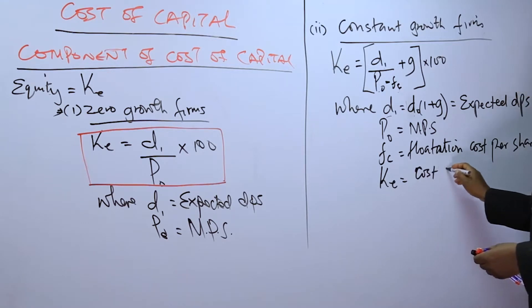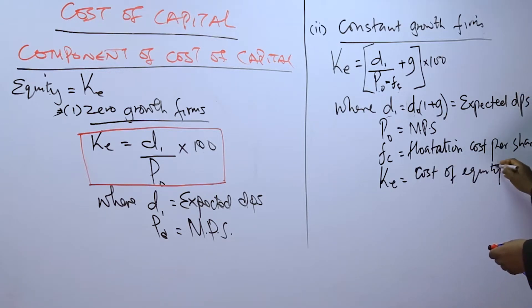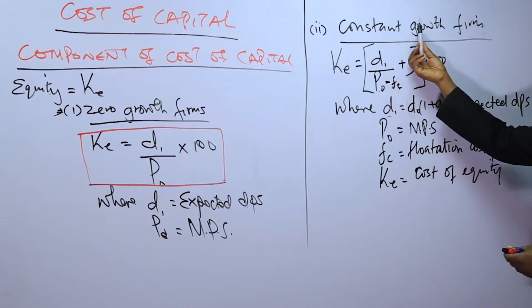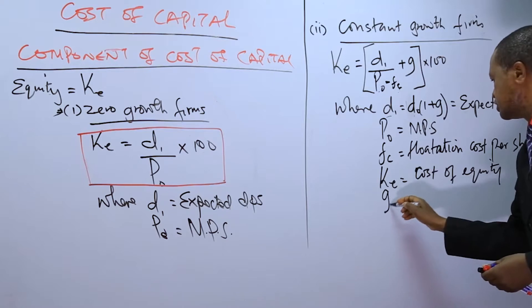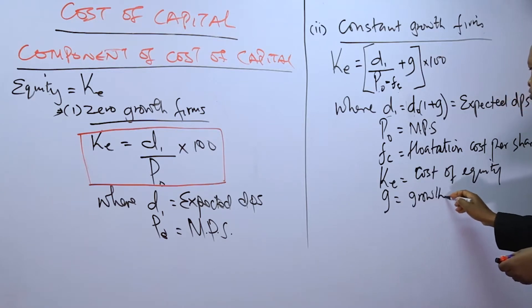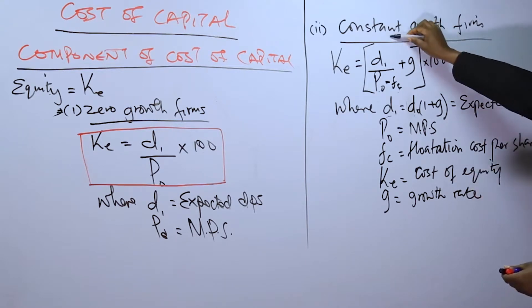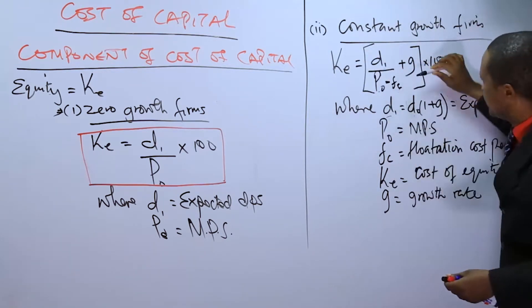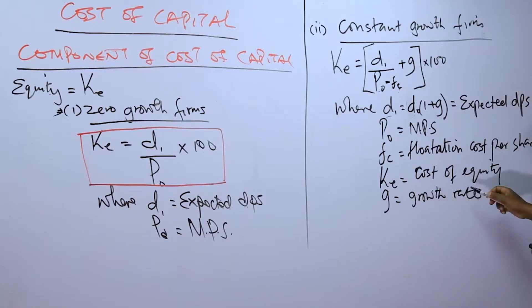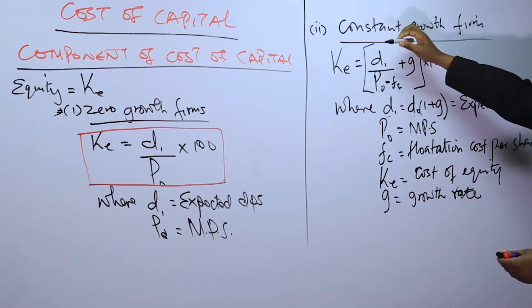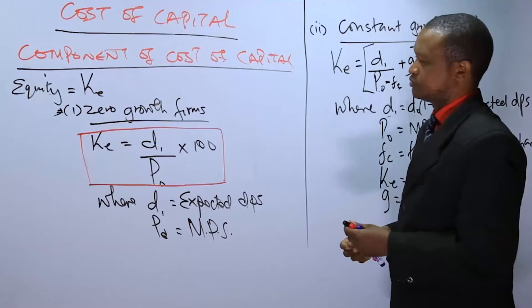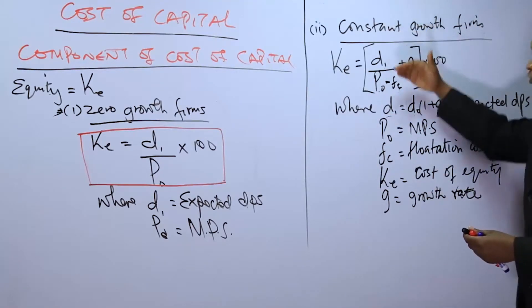KE is the cost of equity. G is the growth rate — since we are talking about a constant growth firm, if a company is growing at a constant rate, we add G, the growth rate, which may be expressed as a percentage. That is how you determine the cost of equity, which is a component of cost of capital.